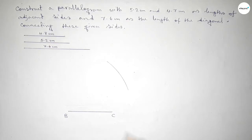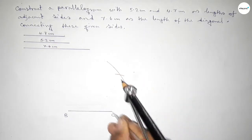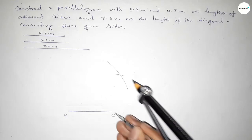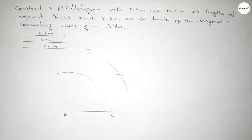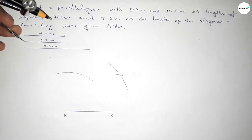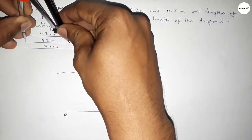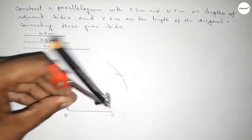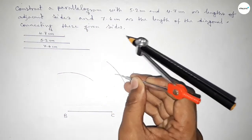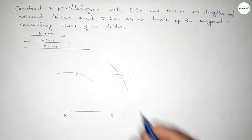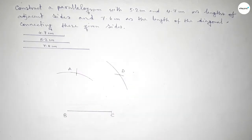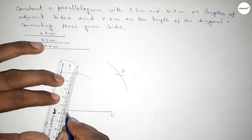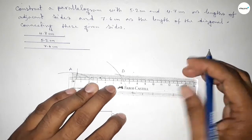Next, taking the length 4.7 centimeter by using compass and putting the compass here, cutting an arc. Again with the same length, putting the compass here and drawing an arc. Now taking the length 5.2 centimeter — they intersect at two points. So taking here point A and here point D.